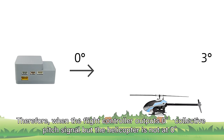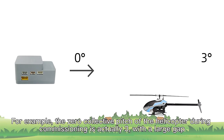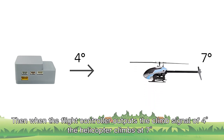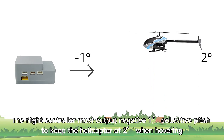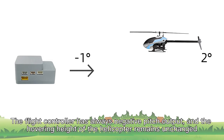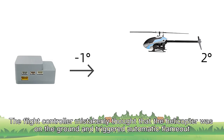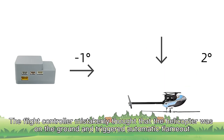When the flight controller outputs 0 degree collective pitch but the helicopter is not actually at 0 degrees — for example, if the 0 collective pitch during commissioning is actually 3 degrees — there is a large gap. The controller must output negative 1 degree to keep the helicopter hovering at 2 degrees. With always-negative pitch output and unchanged hovering height, the flight controller mistakenly thinks the helicopter is on the ground and triggers automatic flame out.